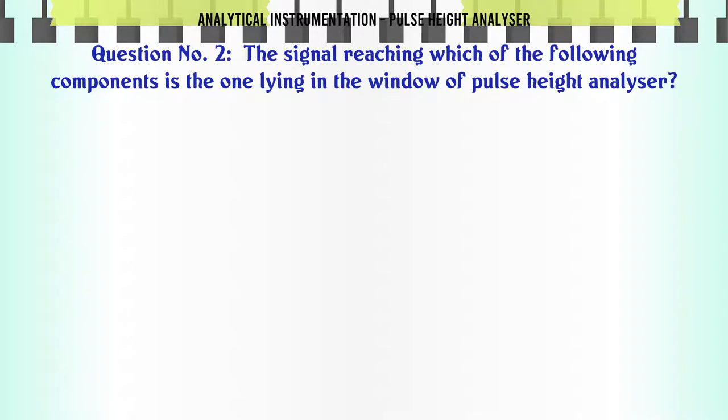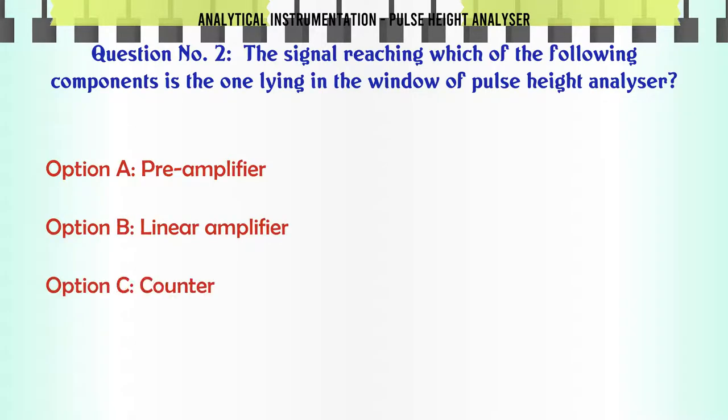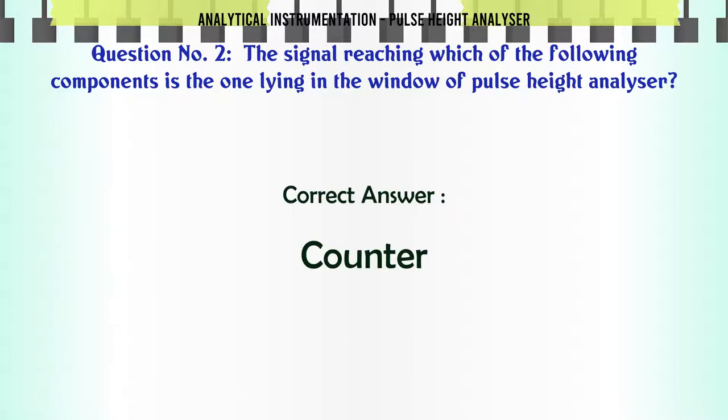The signal reaching which of the following components is the one lying in the window of pulse height analyzer? A. Pre-amplifier. B. Linear amplifier. C. Counter. D. Discriminator. The correct answer is: Counter.